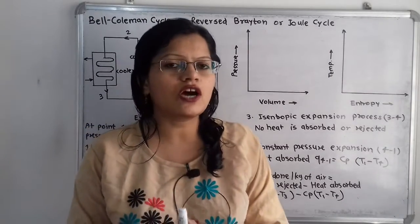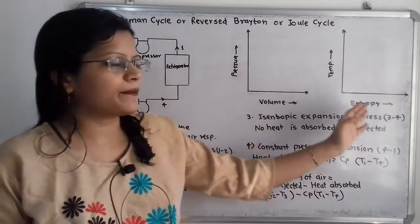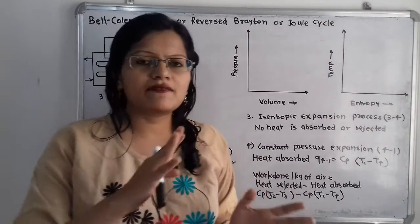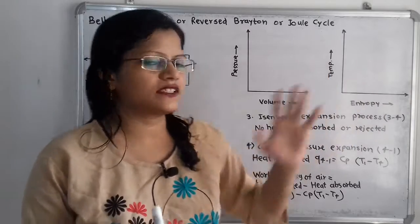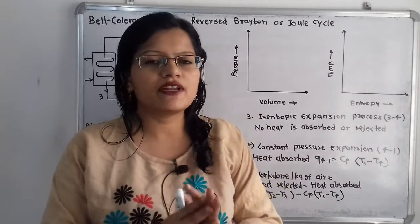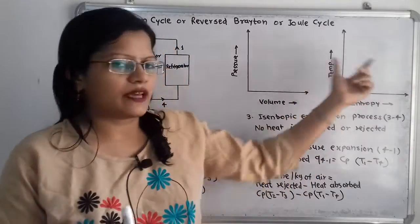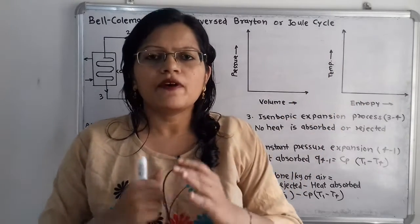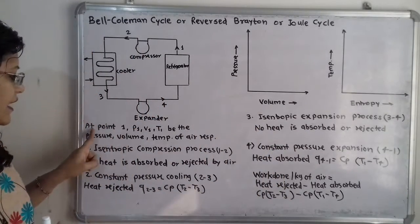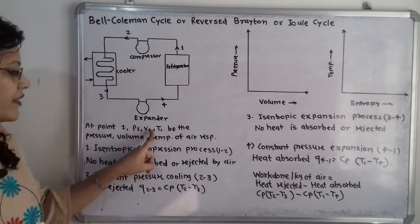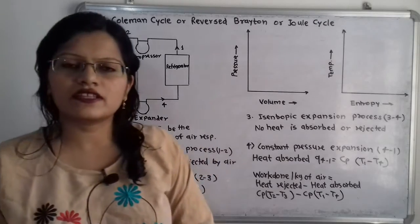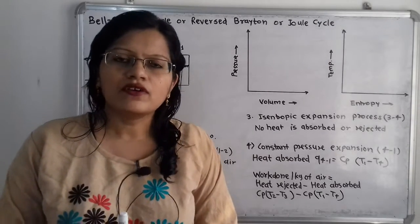There is a relation between pressure, volume, temperature, and entropy, and with the help of those relations we will draw the diagrams. Let us first consider that at point 1, P1, V1, T1 are the pressure, volume, and temperature of air respectively.